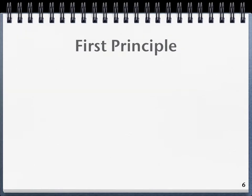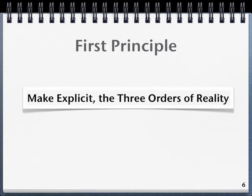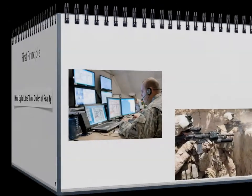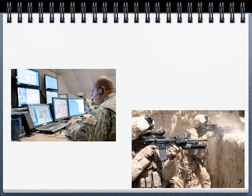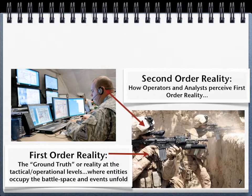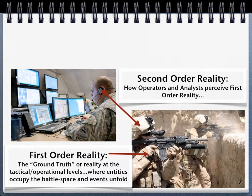First principle: make explicit the three orders of reality. First-order reality is composed of the physical environment where entities occupy time and space, and events unfold through time and space — this is also called the tactical level of war. Second-order reality consists of the operators' and analysts' perceptions of first-order reality.